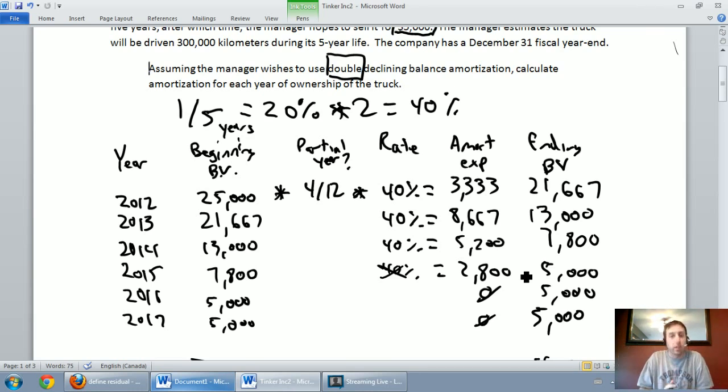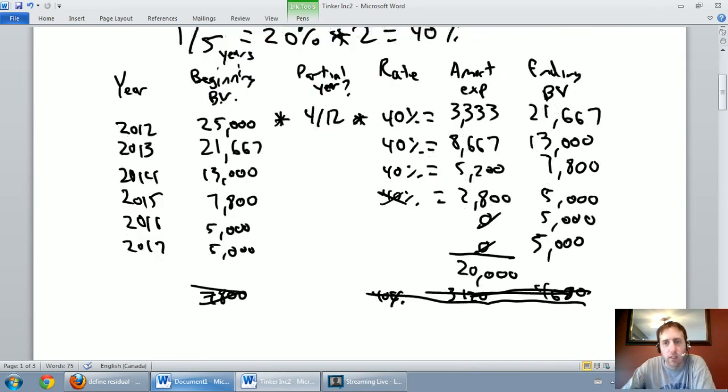This is called double declining balance method. As you can see, it's a very accelerated amortization method. Now, when I add up my amortization expense, there should be a familiar number. 3333 plus 8667 is $12,000. 5200 and 2800 is $8,000. Total up the whole column and you get $20,000. And that, of course, is our amortizable cost. We said we were going to amortize this asset for $20,000. Now, we have.